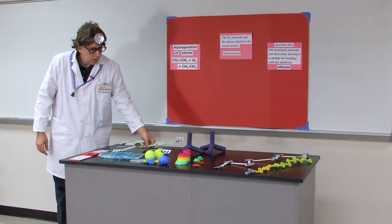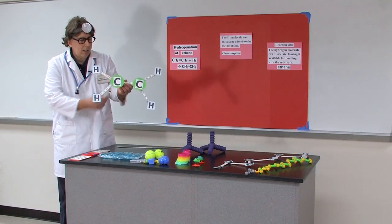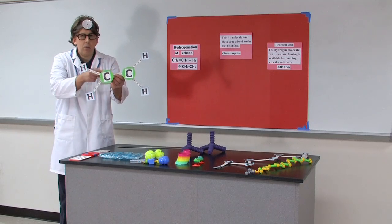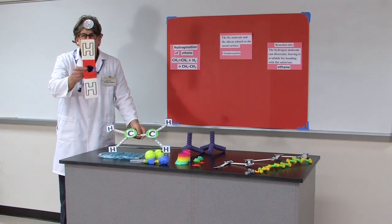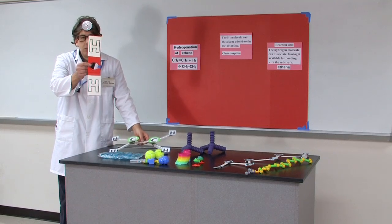So if we go to this demonstration, let's take a look. We've got an ethene molecule—it's got a double bond between the two carbons, has four hydrogens—and we've got a hydrogen molecule, two H atoms.